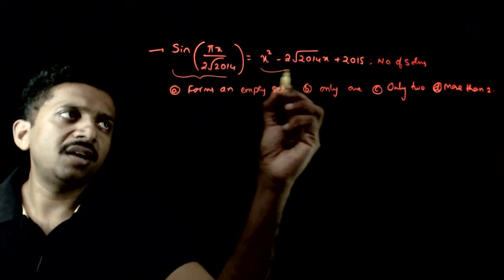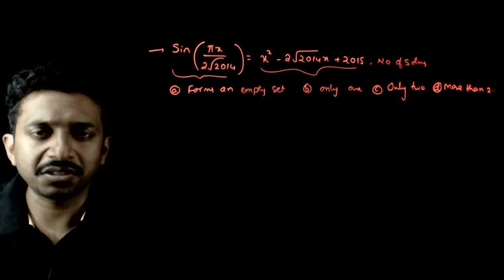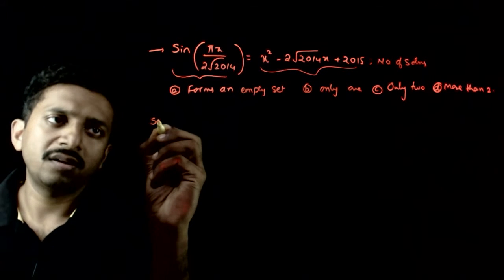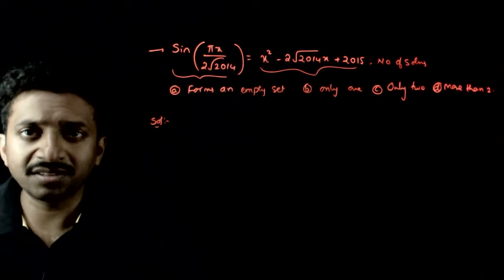A trigonometric ratio is equal to a quadratic function. The number of roots is being asked. Obviously, trigonometric function equal to quadratic function is not directly analytical to solve.